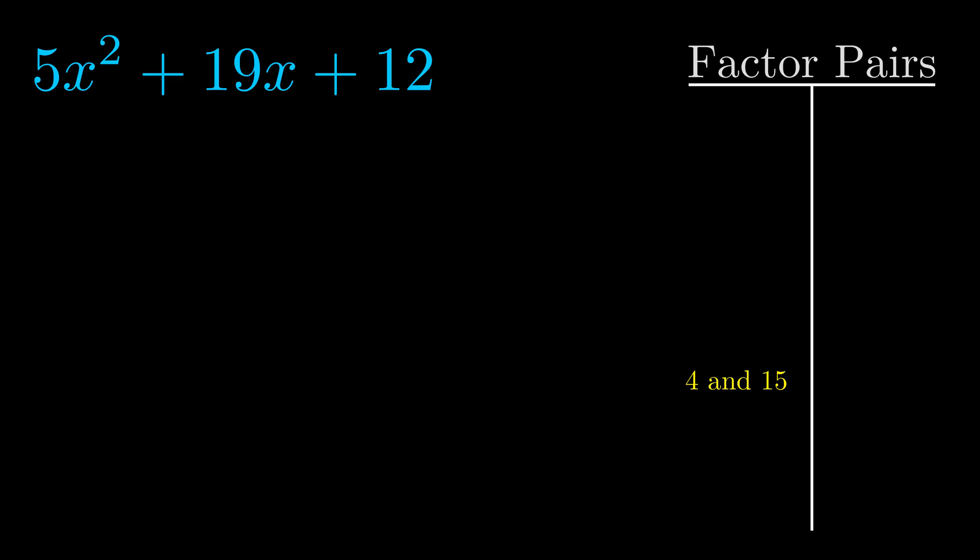Now once we have this factor pair what we want to do is we want to use it to split up the b value.